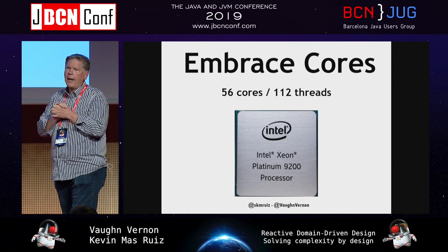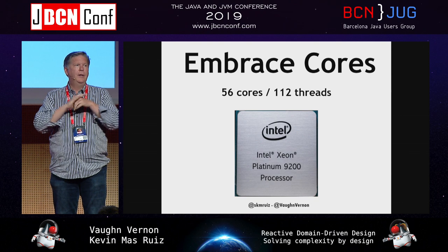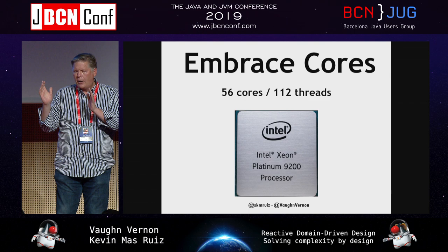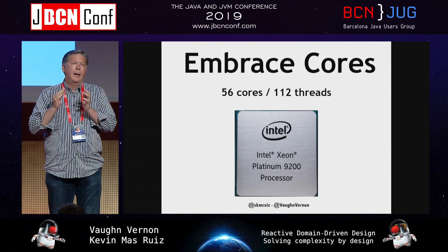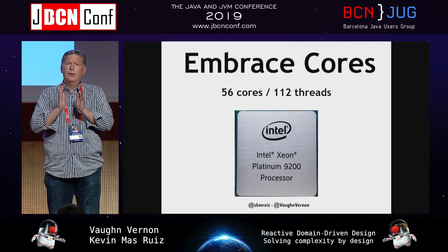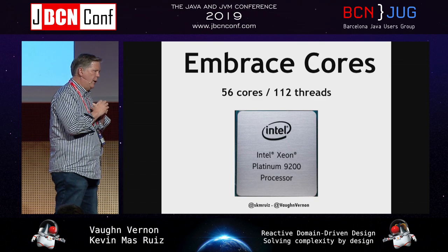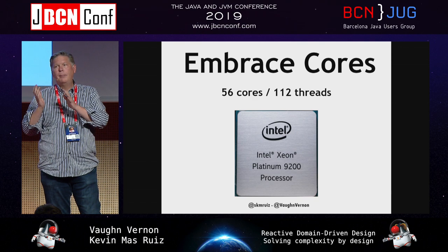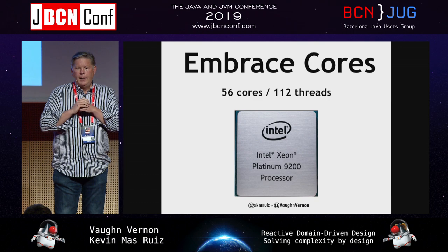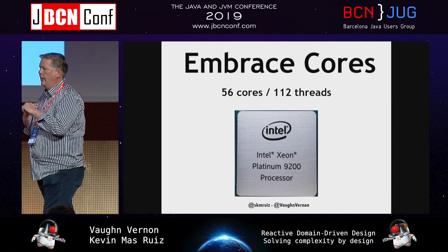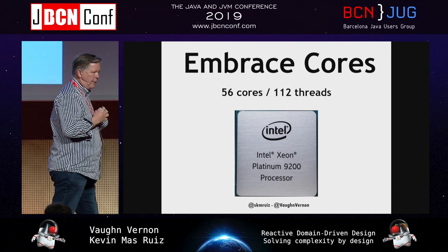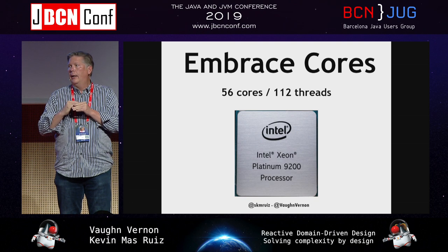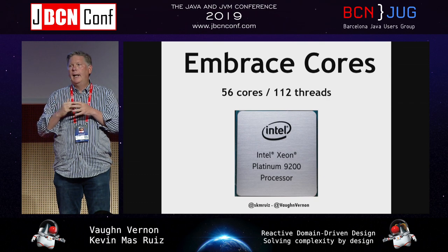Processor cores are not getting much faster. I had a conversation with Martin Thompson, and he told me that Moore's Law - where we were seeing doubling in processor speed about every year and a half to two years - has slowed dramatically: the same kind of speed growth that we saw before 2003 now takes about nine years. And there's also the matter of Spectre and Meltdown, where the OS is now protecting against vulnerabilities in ways that tend to slow our software down. Obviously, we want to use processor cores as efficiently as possible.